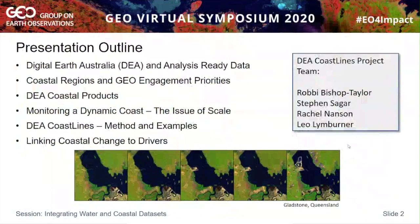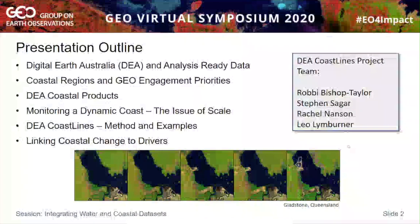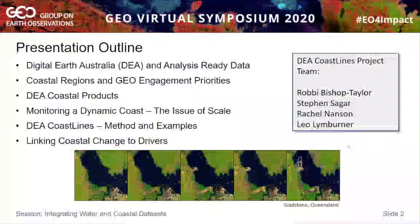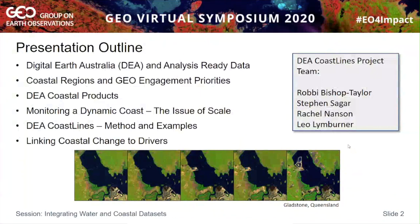This is a collaborative project. Robbie Bishop-Taylor largely leads the technical component of this work, along with myself, Rachel Nansen, our coastal geomorphologist, and Leo Limburner. For a brief outline, I'll talk about Digital Earth Australia in a data cube context and what analysis-ready data means, look at coastal regions and how they align with geo priorities, then discuss DEA coastal products developed over the last couple of years, and how we're moving toward monitoring a dynamic coast, before introducing DEA Coastlines — its method, examples, and future work linking it to environmental drivers.